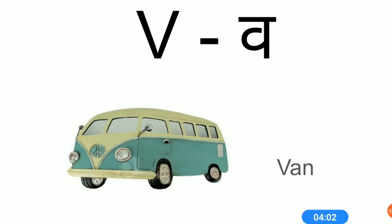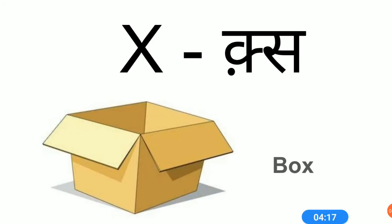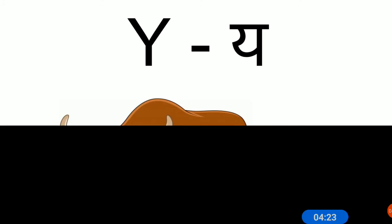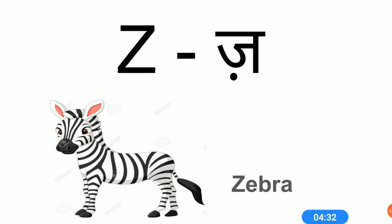V sound is V. V for van. W sound is W. W for watch. X sound is X. X for box. Y sound is Y. Y for yak. Z sound is Z. Z for zebra. Students, practice all the sounds at home. Thank you.